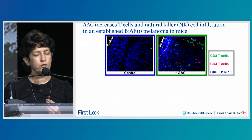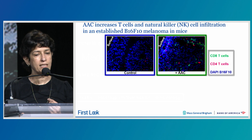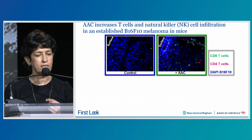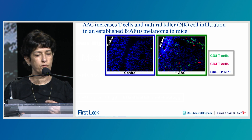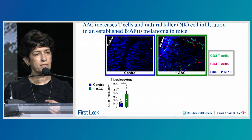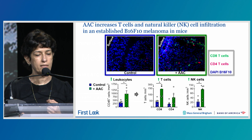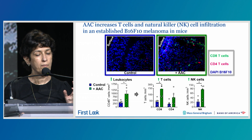When we treat a humanized Fc-gamma receptor mouse with AAC engaging human CD16B, we find increased T-cell and natural killer NK-cell infiltration. On the left-hand side, you see a control B16F10 melanoma—cells in blue—with little CD8 T-cell infiltrate in green or CD4 T-cells in red. With AAC treatment on the right-hand side, you get robust infiltration of both CD8s and CD4s deep into the tumor parenchyma. Total leukocyte infiltrate increases significantly, with a nice increase in CD8s representing clonal expansion and infiltration.